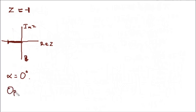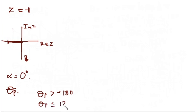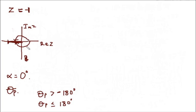To find our theta_p, remember: theta_p has to be within the range — greater than minus 180 and less than or equal to 180 degrees. We can find theta_p by using one of the two options, picking the shortest path to our complex number. In this case, both of them have the same length to our complex number.